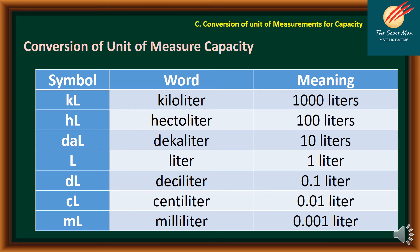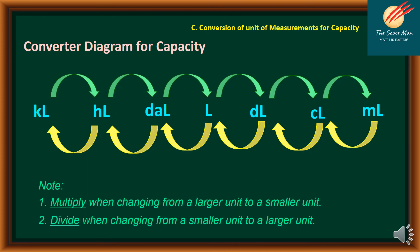Let's move on to the third type of conversion: units of measurement for capacity. We have the following units with symbols and meanings: KL — kiloliter — equals 1,000 liters; hectoliter equals 100 liters; decaliter equals 10 liters; liter equals 1 liter; deciliter equals 0.1 liter; centiliter equals 0.01 liter; and milliliter equals 0.001 liter. Using the converter diagram for capacity, we multiply when changing from a larger to a smaller unit, or move the decimal point to the right. We divide when changing from a smaller to a larger unit, or move the decimal point to the left.